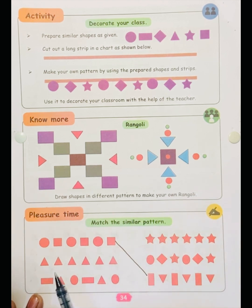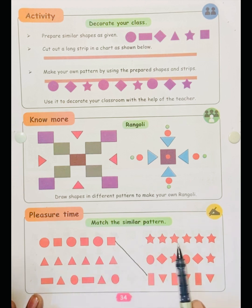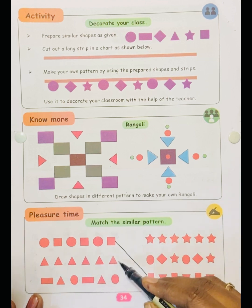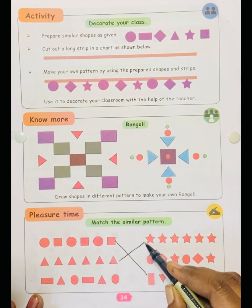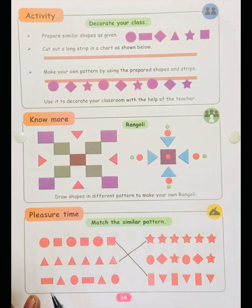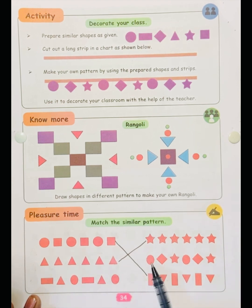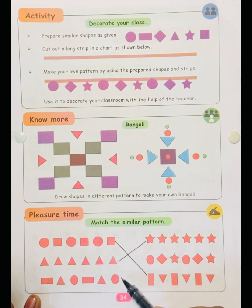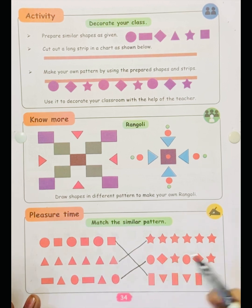Next one — see, all are triangles here; here all are stars. So this is the similar pattern. See here three objects are used: one, two, three. Here see — one, two, three; one, two, three. Three shapes are used.